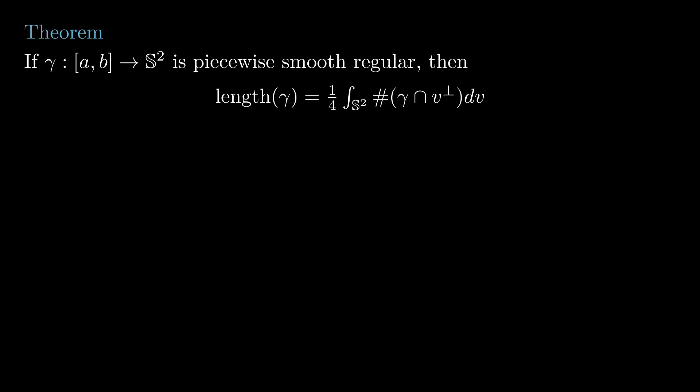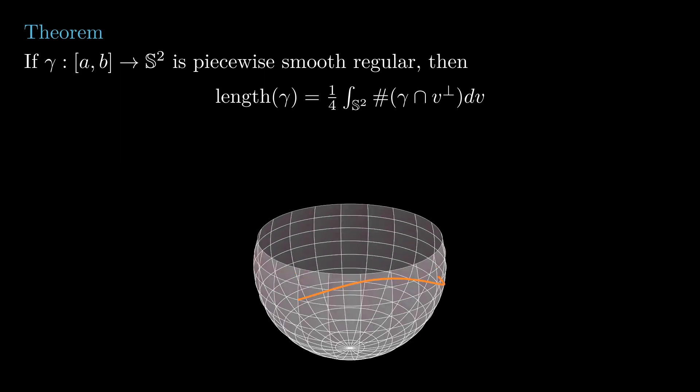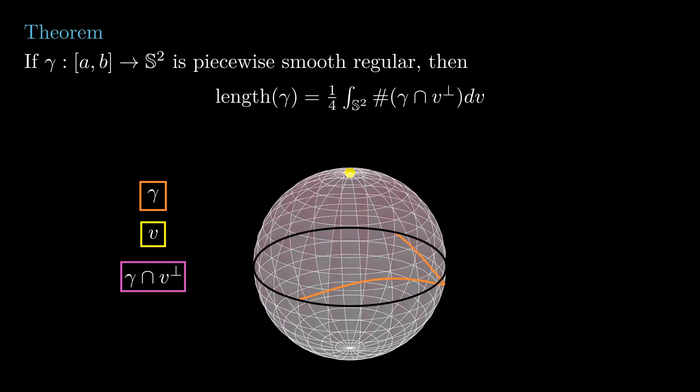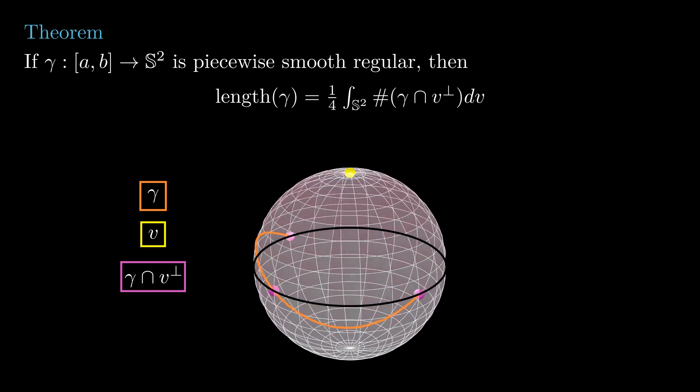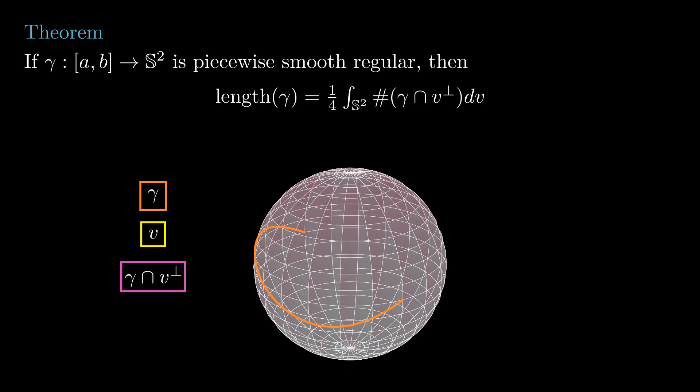The second spherical Crofton formula is not about projections, but about intersections. For a piecewise smooth regular curve gamma, its length is ¼ times the integral with respect to v of the number of intersections of gamma with the equator perpendicular to v. That is, for each v in the sphere, we count the number of times the curve gamma intersects the equator perpendicular to v, and integrate this quantity over the entire sphere. The proof of this theorem requires some machinery from differential topology and measure theory, so don't worry if you need to come back to it later.